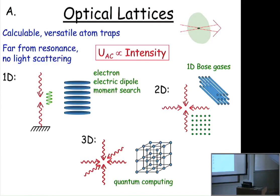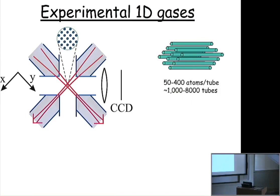In my group, there are experiments using all these different kinds of lattices. We're searching for the electron dipole moment using atoms in a trap. I'll talk about 1D Bose gas experiments. We also do experiments with a three-dimensional trap trying to make a quantum simulator. I also note — and it seems especially relevant for this audience — that we're pretty close to demonstrating a Maxwell daemon for 50 atoms, where the daemon uses information from measuring the distribution of atoms in lattice sites to perform reversible steps that lower entropy and extract work. But that's not what I'm going to talk about today.